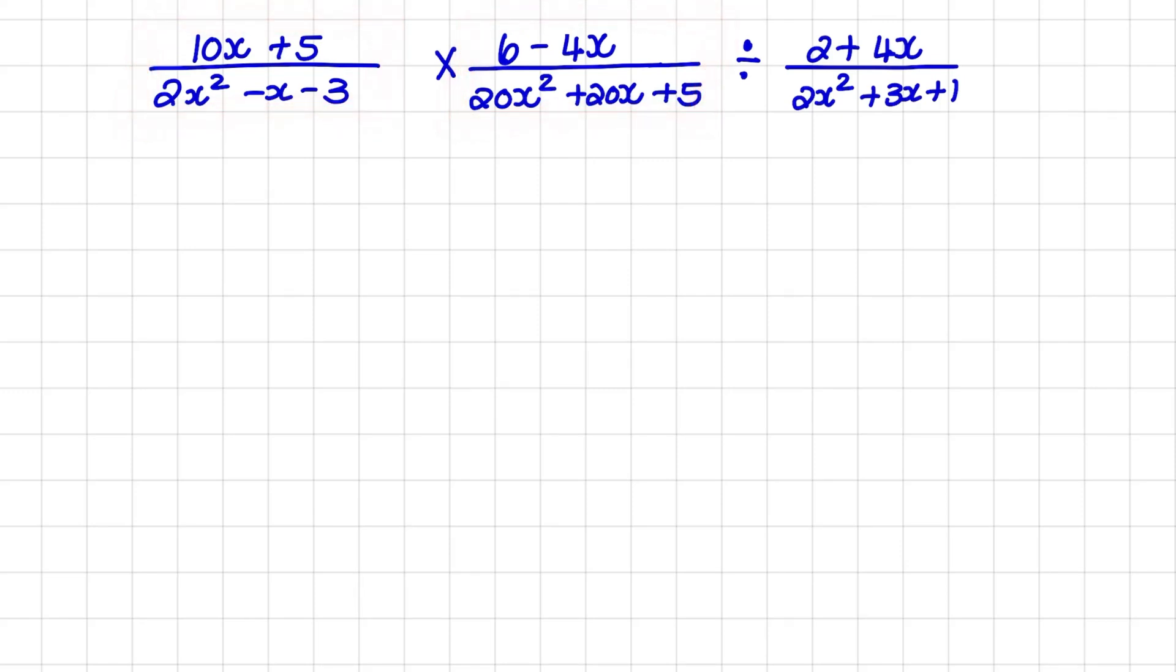So in our first fraction, in the numerator, we have 10x plus 5. I notice that the greatest common factor would be 5, and that leads me to 2x plus 1 as my bracket.